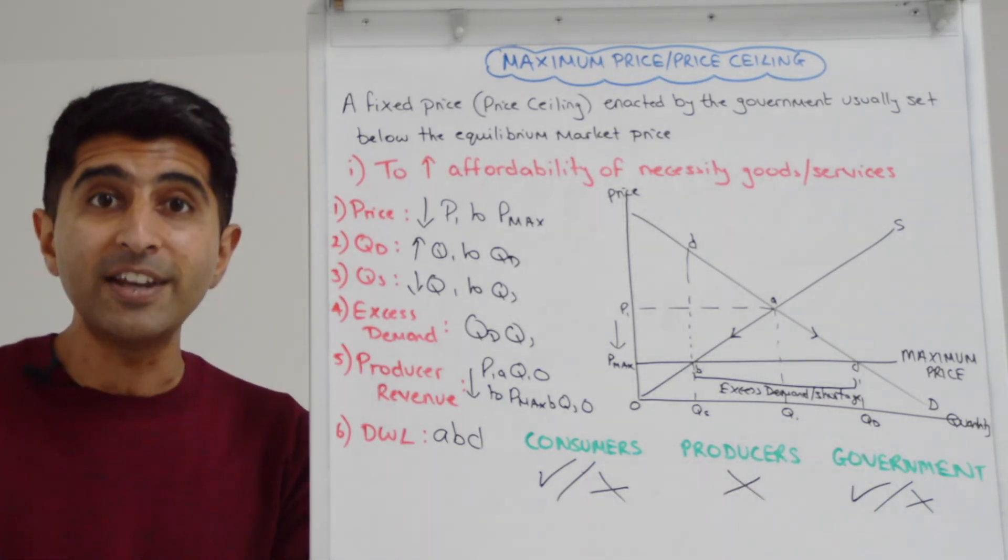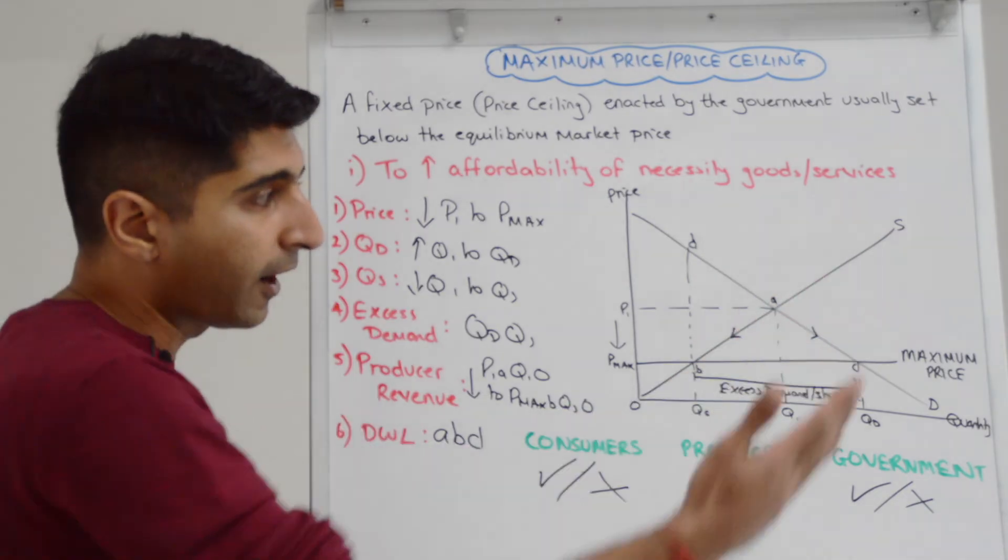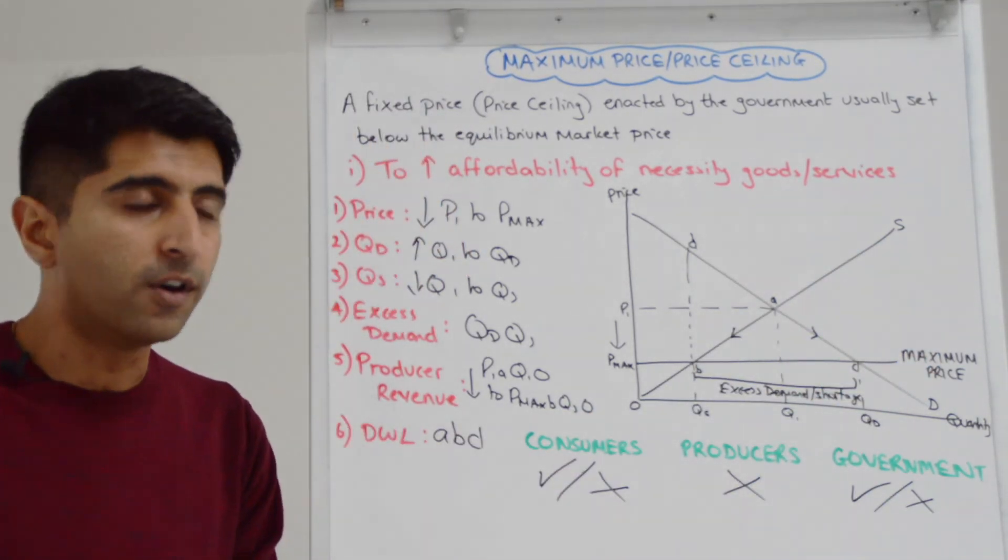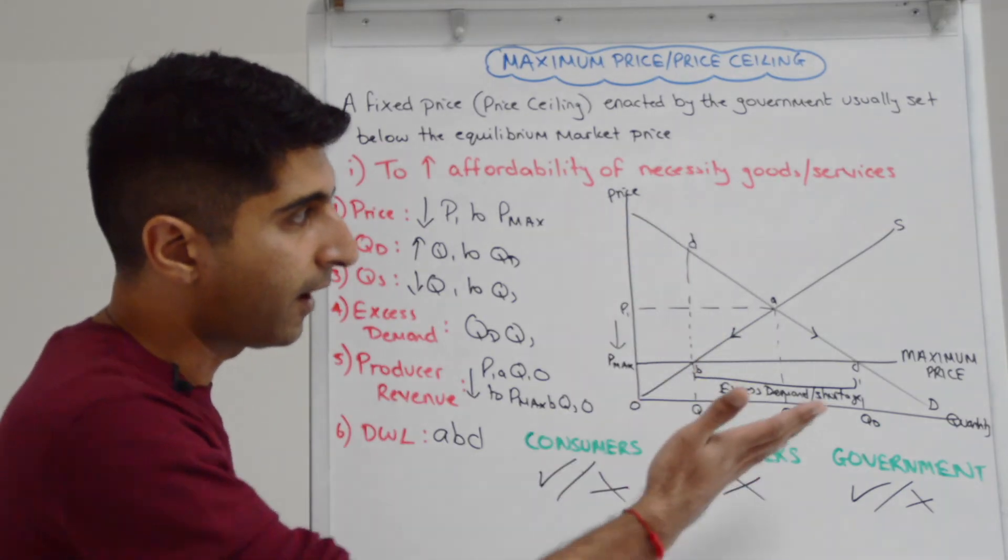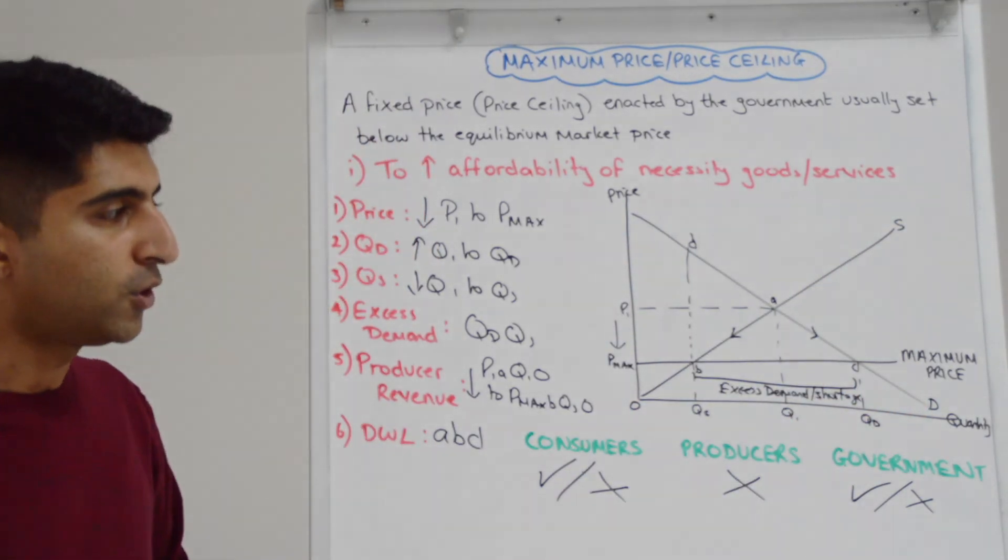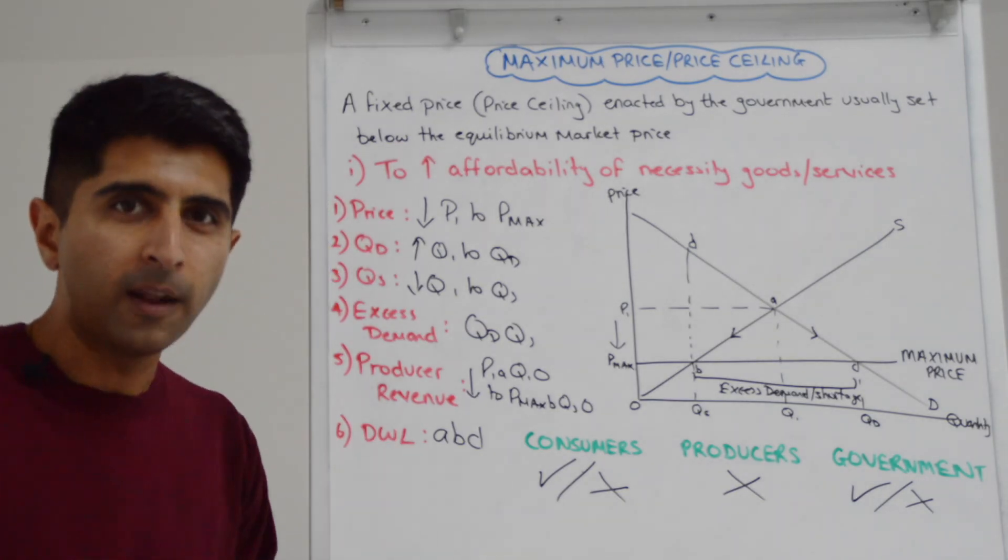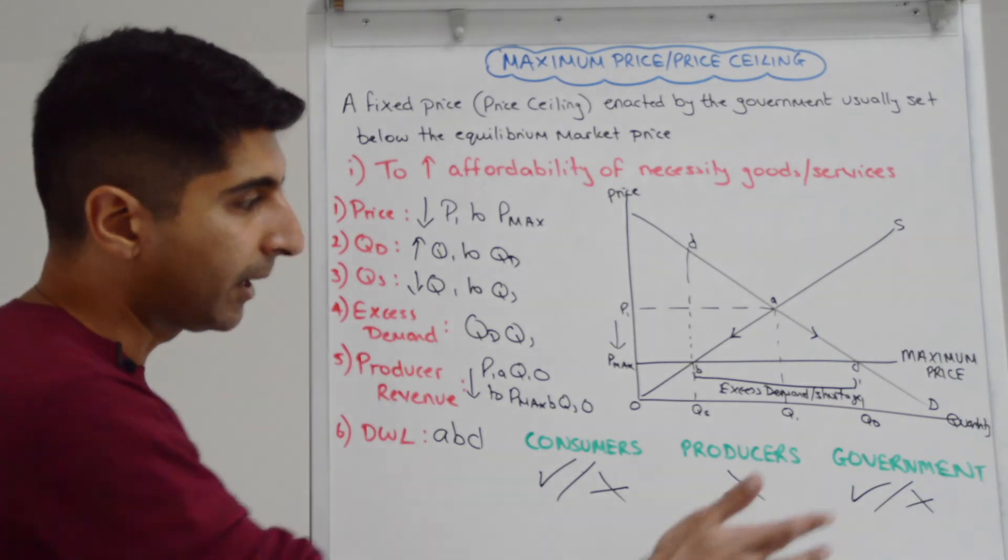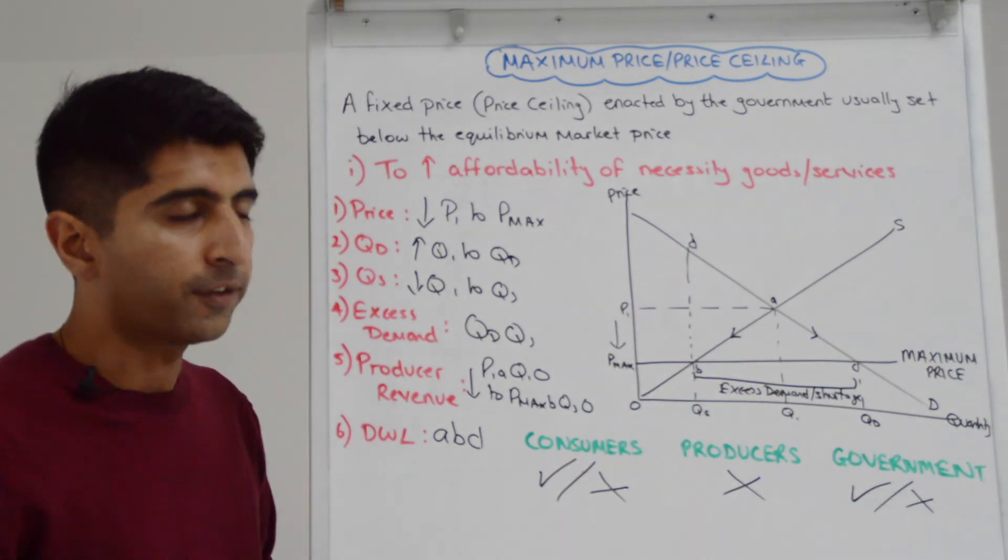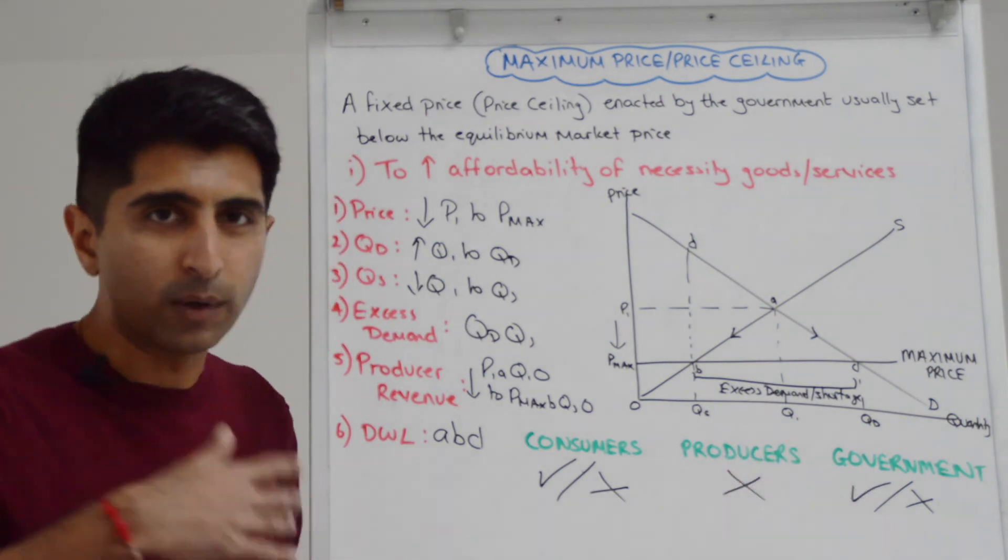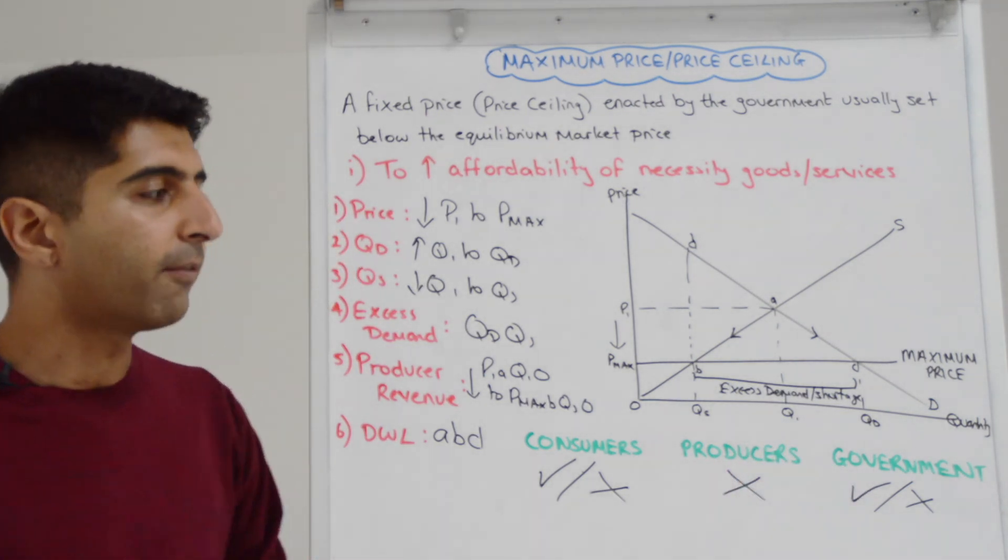So much so, they might even intervene to correct it and maybe subsidize private firms to shift supply to equal demand, maybe provide their own goods or services if necessary to increase supply to QD. But with that comes a huge opportunity cost, wasteful money there to try and correct an issue that the government has created. Furthermore, the government will be concerned about the deadweight loss too. So you could argue that maybe outweighs whatever the gains, whatever the intentions are of the government here.